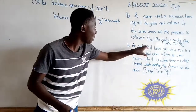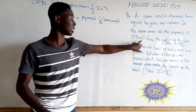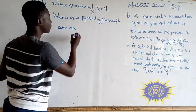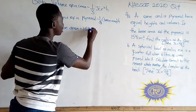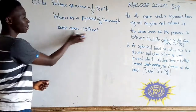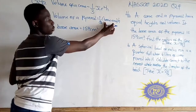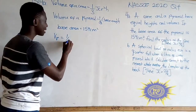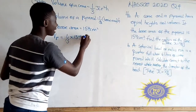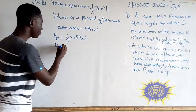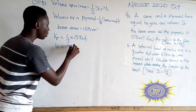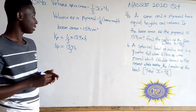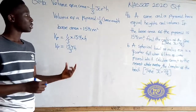The base area is 154 cm squared. We are going to replace the base area with 154 cm squared. So we get the volume of the pyramid is equal to one-third times 154 times height, which gives the volume of the pyramid equal to 154 over 3 times height.